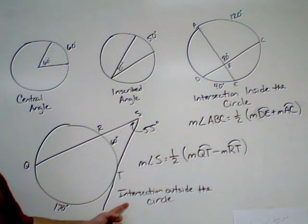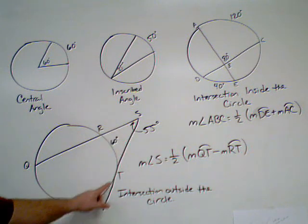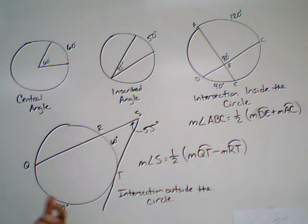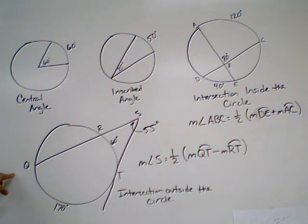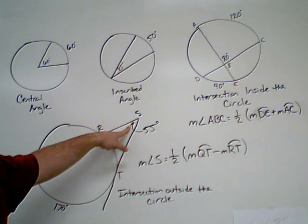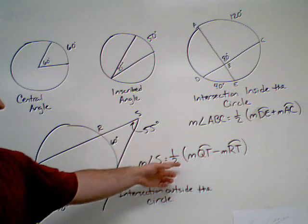I have a secant here and I have a tangent here. I could also have another tangent or another secant if I wanted to, but I'm using this. What I do is I'm looking for the measure of angle S—that's the intersection out here outside the circle.